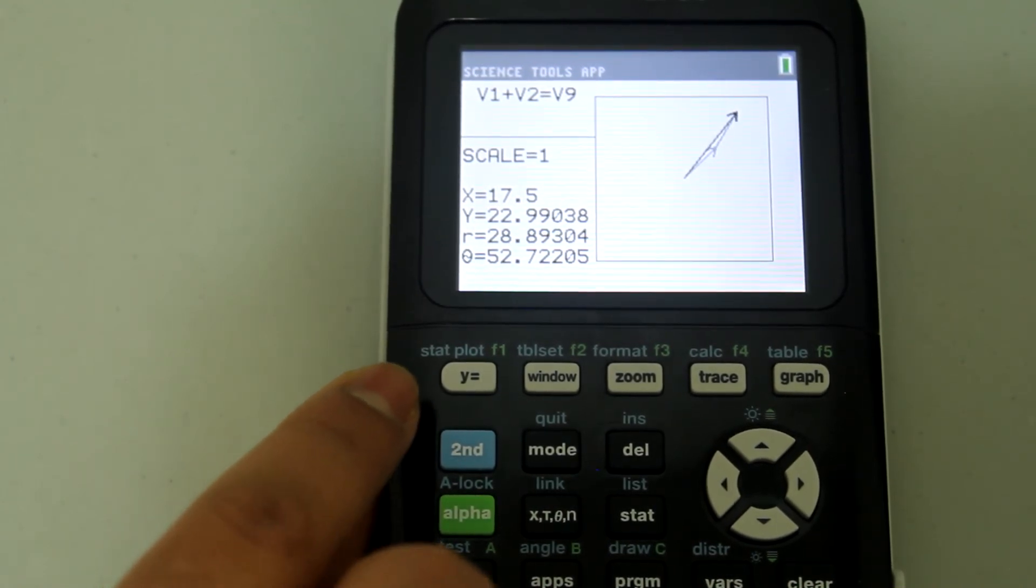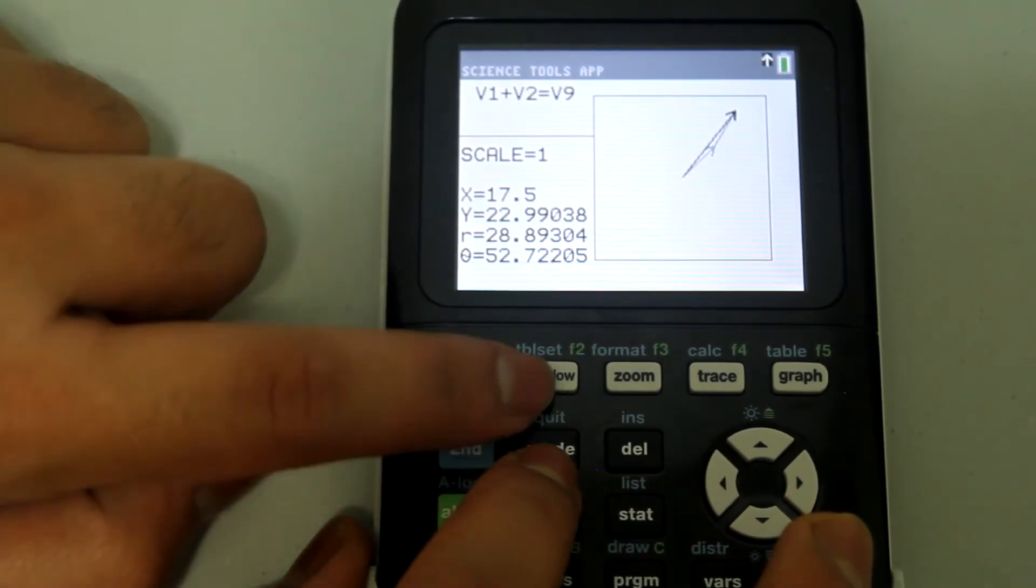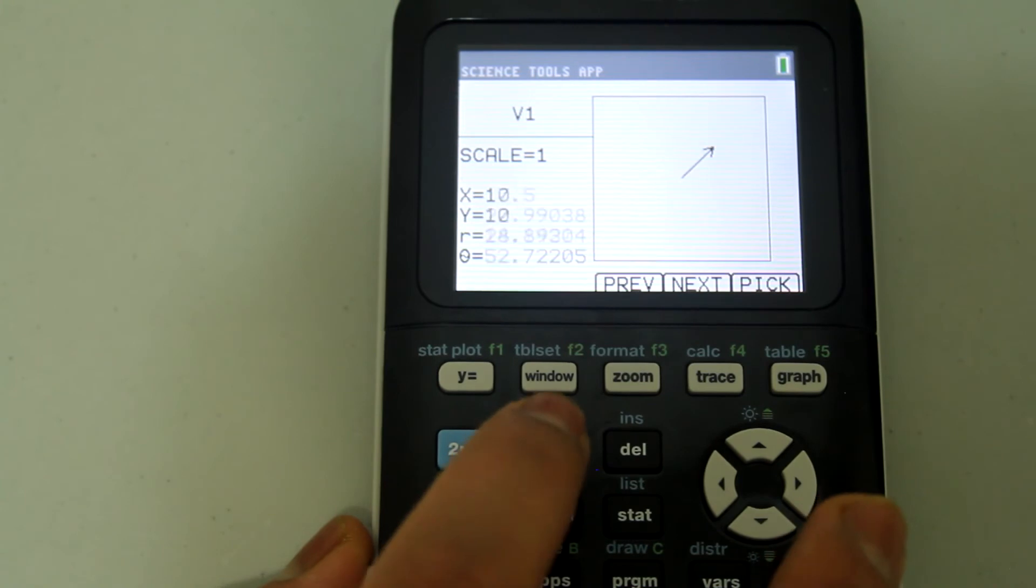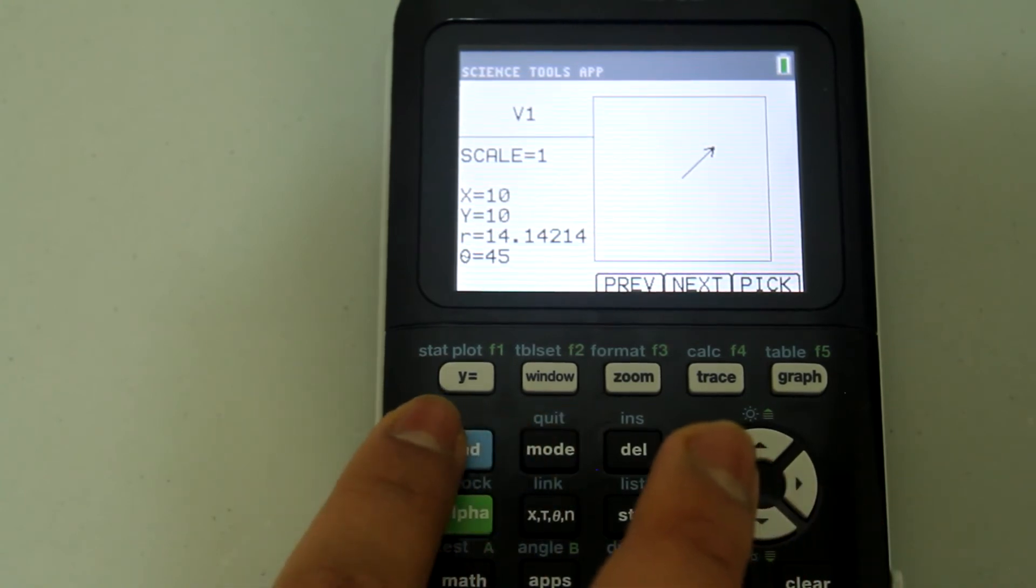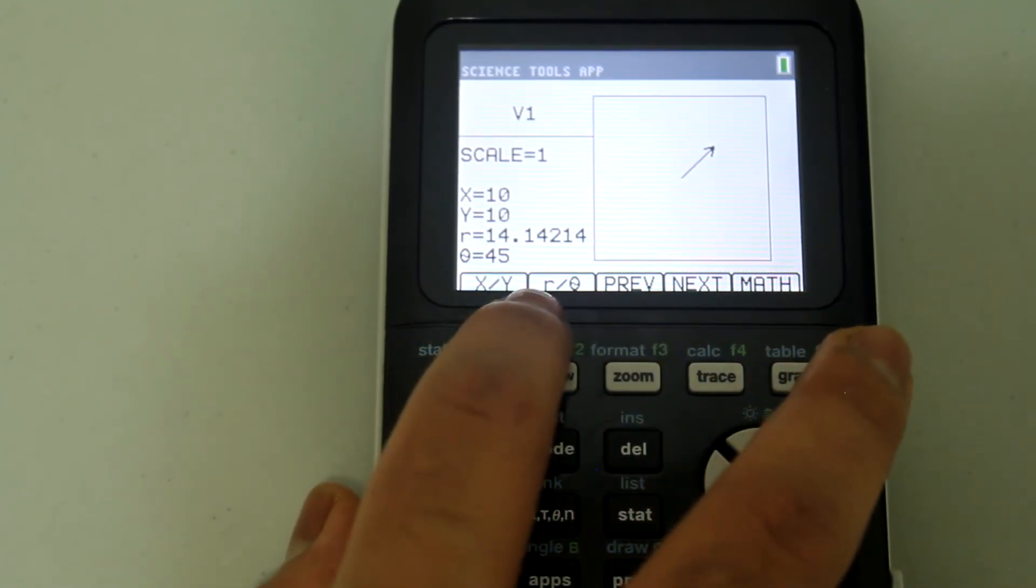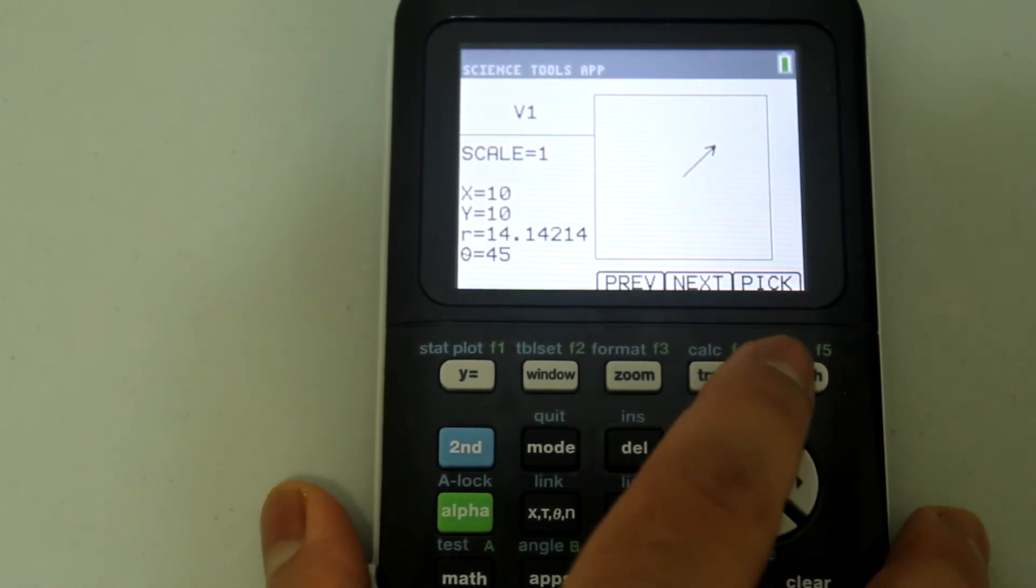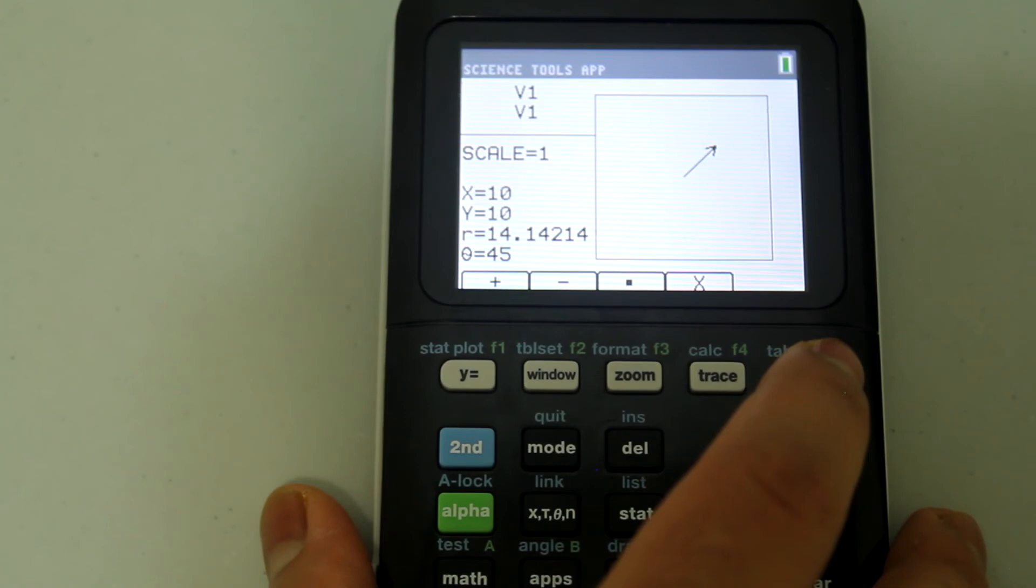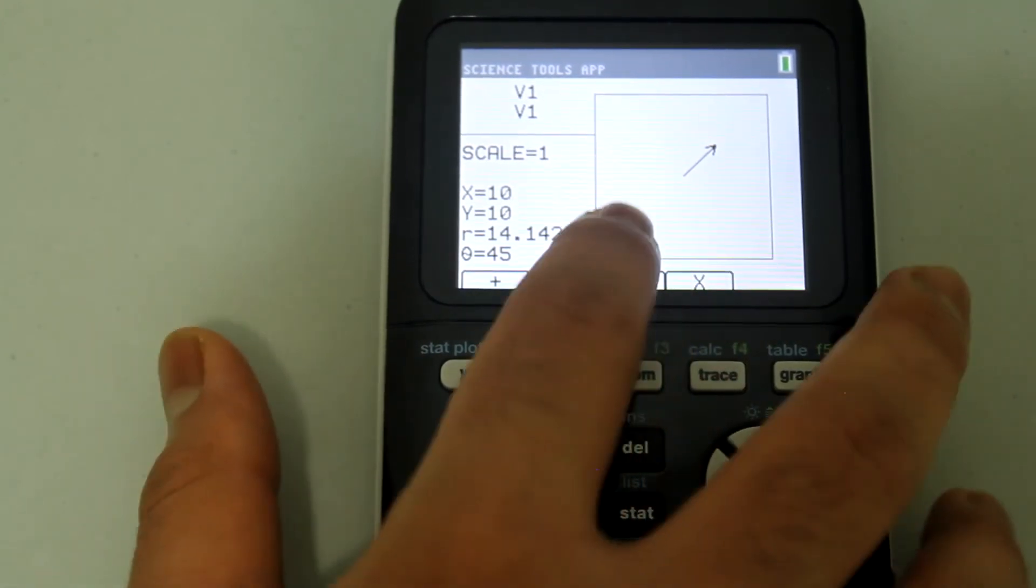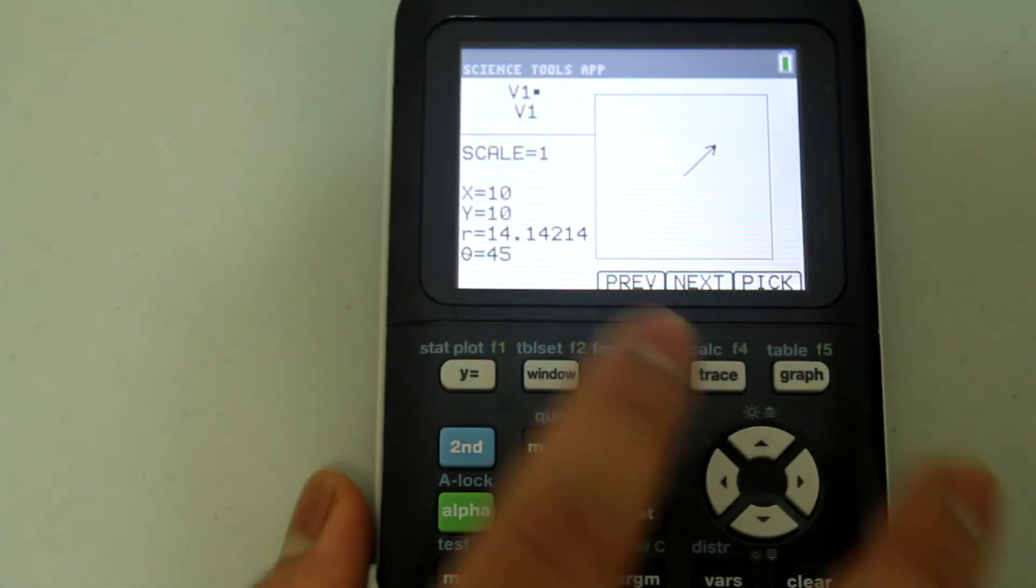Now let's exit the screen. To exit you hit second and mode which has the quit option. If you hit second mode again you would go back to the screen where you can enter X and Y components. But let's go to math again using the graph button. This time let's do a dot product.